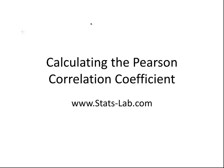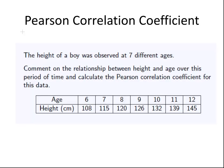In this presentation we are going to look at how to calculate the Pearson correlation coefficient. The question here is as follows: the height of a boy was observed at seven different ages. Comment on the relationship between height and age over this period of time and calculate the Pearson correlation coefficient for this data set.